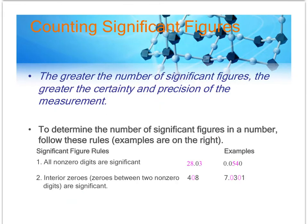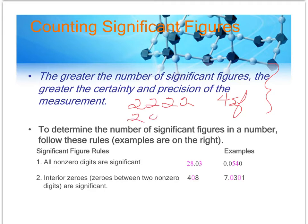The greater the number of significant figures, the greater the precision of the measurement. For example, a number with four sig figs is more precise than one that only has one sig fig. The number with the most sig figs has more precision.